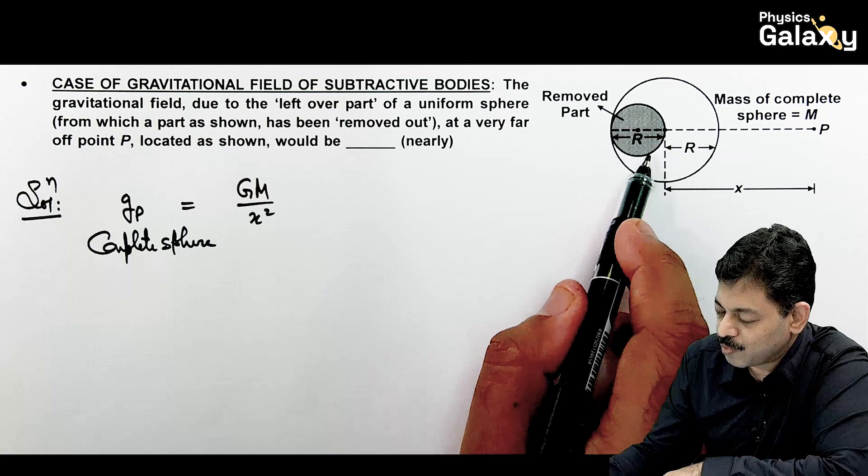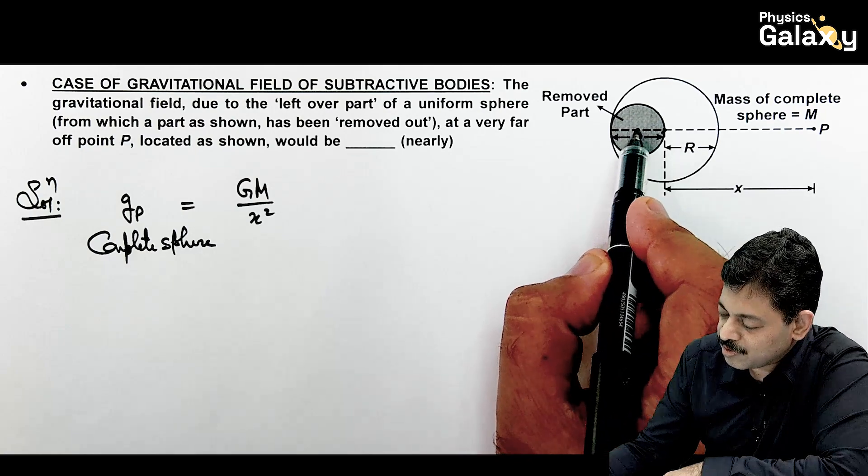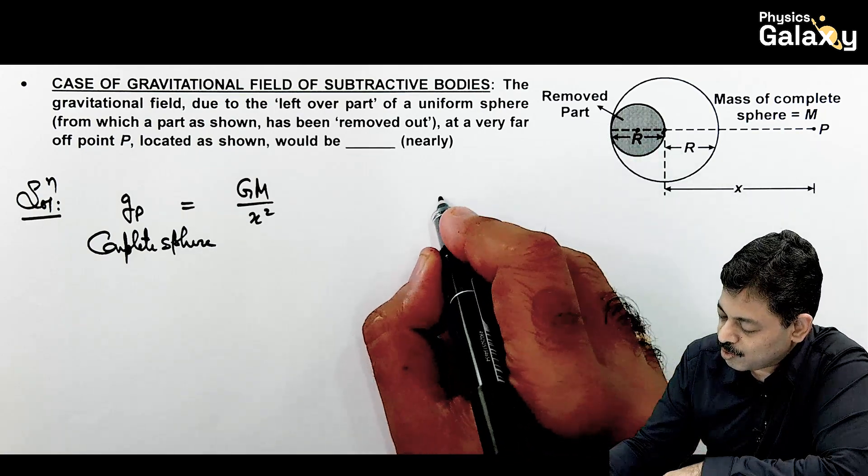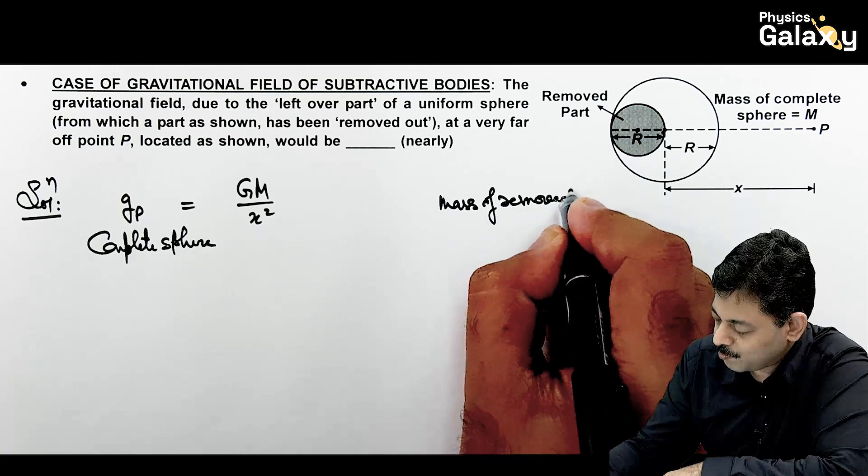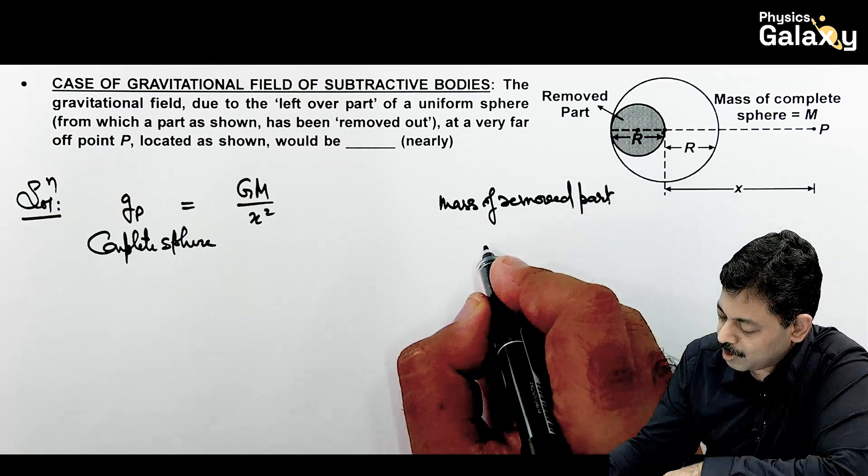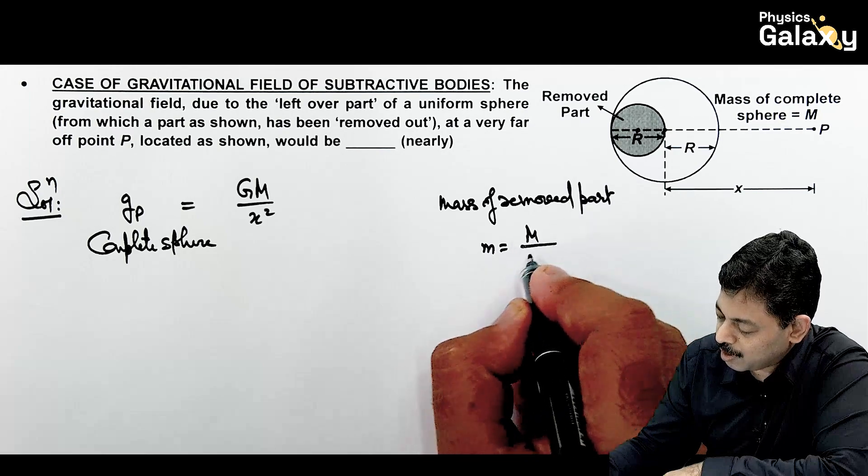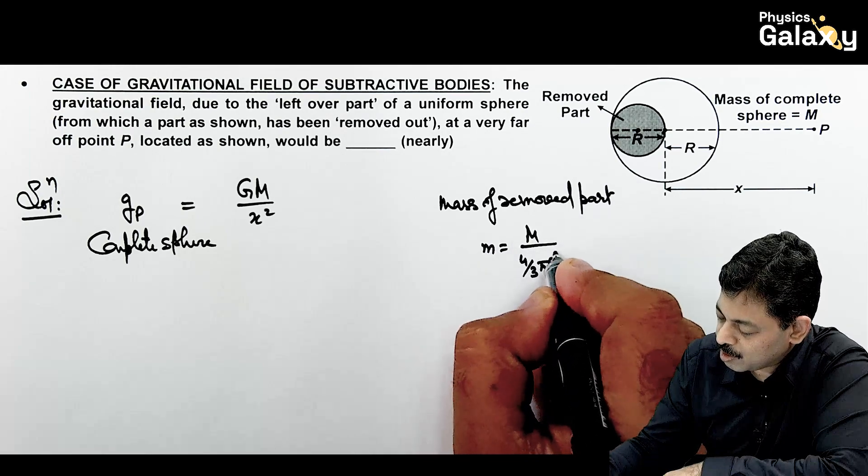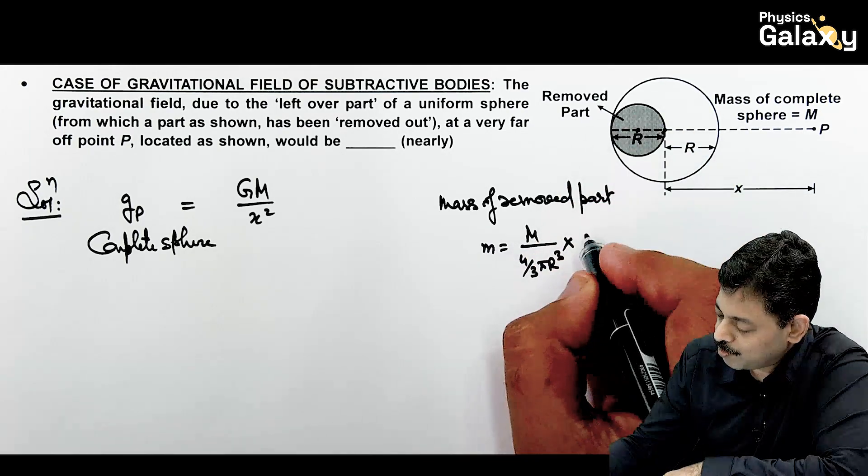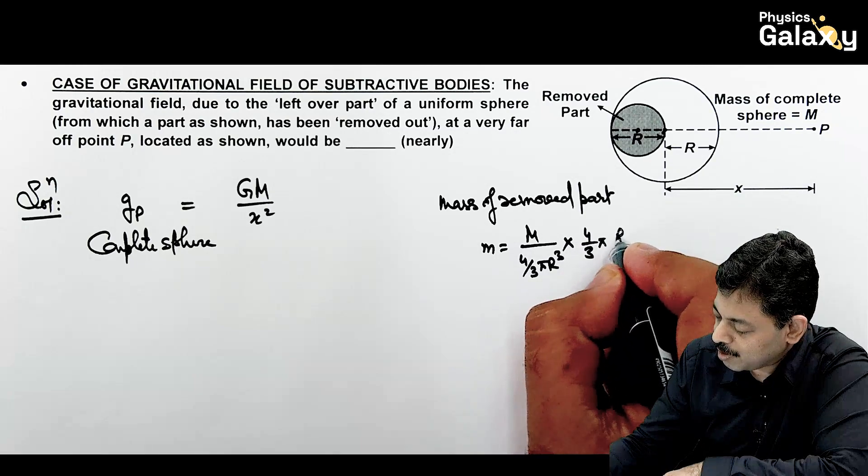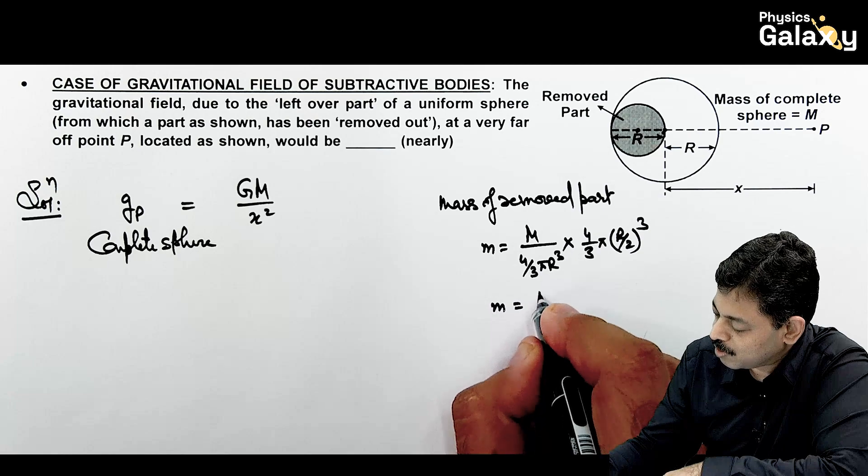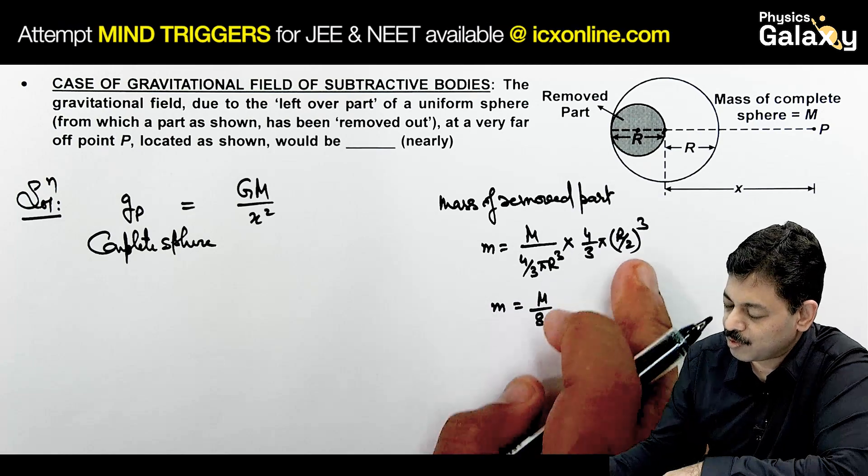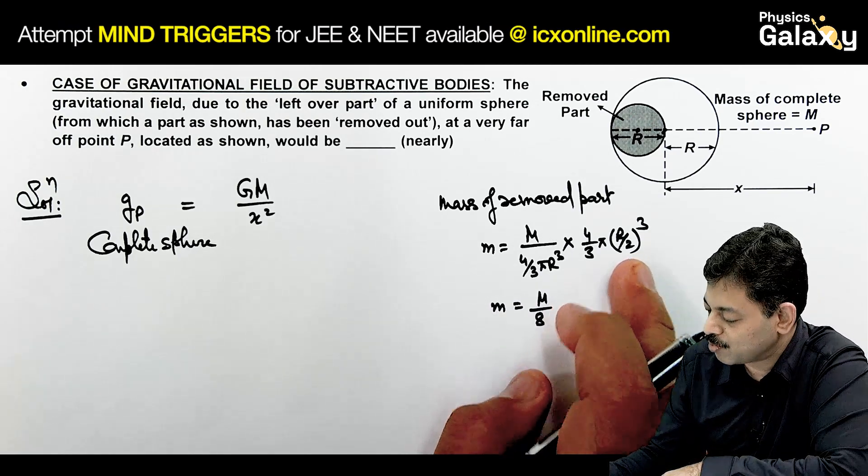Now due to the part which is removed, center is at a distance R by 2, one part is removed. So if we calculate the mass of removed part, that can be written as M, which is capital M upon 4 by 3 pi R cubed, multiplied by the volume of this part is 4 by 3 pi R by 2 cubed. So if you check it, this gives you capital M by 8, because this will be 1 by 8 R cubed.